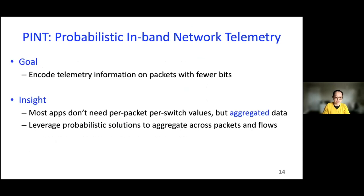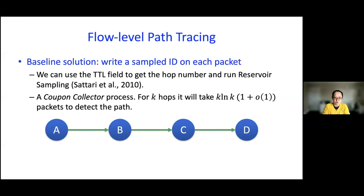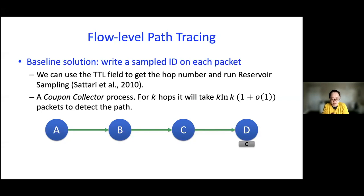How can we use approximation algorithms like coding to encode this telemetry information more compactly, with fewer bits? The key insight is that many applications don't actually need per-packet per-switch values, but only rely on aggregated data. That gives us room to leverage probabilistic solutions to aggregate across packets and flows and provide information with fewer bits. I'll show one example to give some flavor of the approximation we use. The problem we focus on is path tracing: we want to know all the switches on the path a packet sees. Instead of having a single packet carry all switch information, a natural idea is sampling.